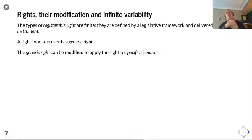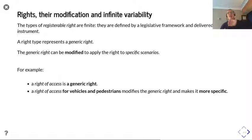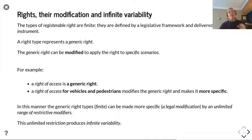Each of these right types represents a generic right, but the generic right itself can be modified to apply to specific scenarios. For example, you can have a right of access — that right of access is a generic right type. But you could also have a right of access for vehicles and pedestrians, which modifies the generic right and makes it more specific: a right of access specifically for vehicles and pedestrians, not for cows or trains or hot air balloons. In this manner, the generic right types can be made more specific, giving it a legal modification.